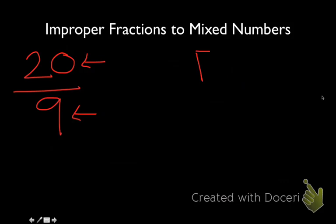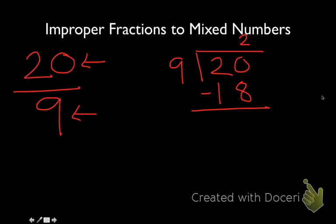The way we want to change improper fractions to mixed numbers is to divide our numerator by our denominator, and we can set that up using a regular long division problem. So we'll put 20 divided by 9 and solve it like a regular long division problem. We know that 9 goes into 20 two times, so we'll put the 2 over the ones place. 9 times 2 is going to be 18. We want to find that difference, so we'll regroup, and we find that our remainder is going to be 2.